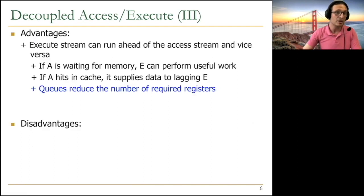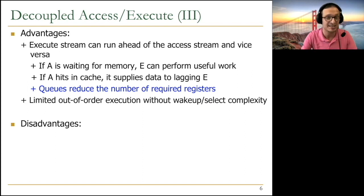The big advantage is execute stream can run ahead of the access stream and vice versa. If the access processor is waiting for memory, execute processor can perform useful work. If access processor hits in the cache, it supplies the data to the lagging execute processor. Usually the memory accesses take longer, so execute can perform useful work, independent instructions, while the access processor is waiting. The key idea is queues reduce the number of required registers. You have limited out-of-order execution without the wake-up and select complexity and without large physical register files.